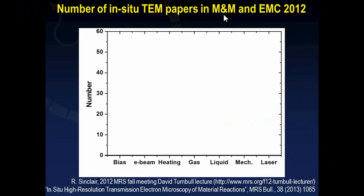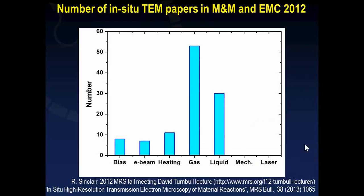In 2012, two major electron microscopy conferences were held: the Microscopy and Microanalysis meeting and the European Microscopy Congress. This slide shows the breakdown of in situ TEM papers at these two meetings, categorized by stimulus — namely electrical bias, electron beam-induced heating, controlled heating using a heating holder, gas-related experiments, liquid-related experiments, mechanical stimulus, and laser stimulus. There is a dominance in the number of in situ papers across these categories.